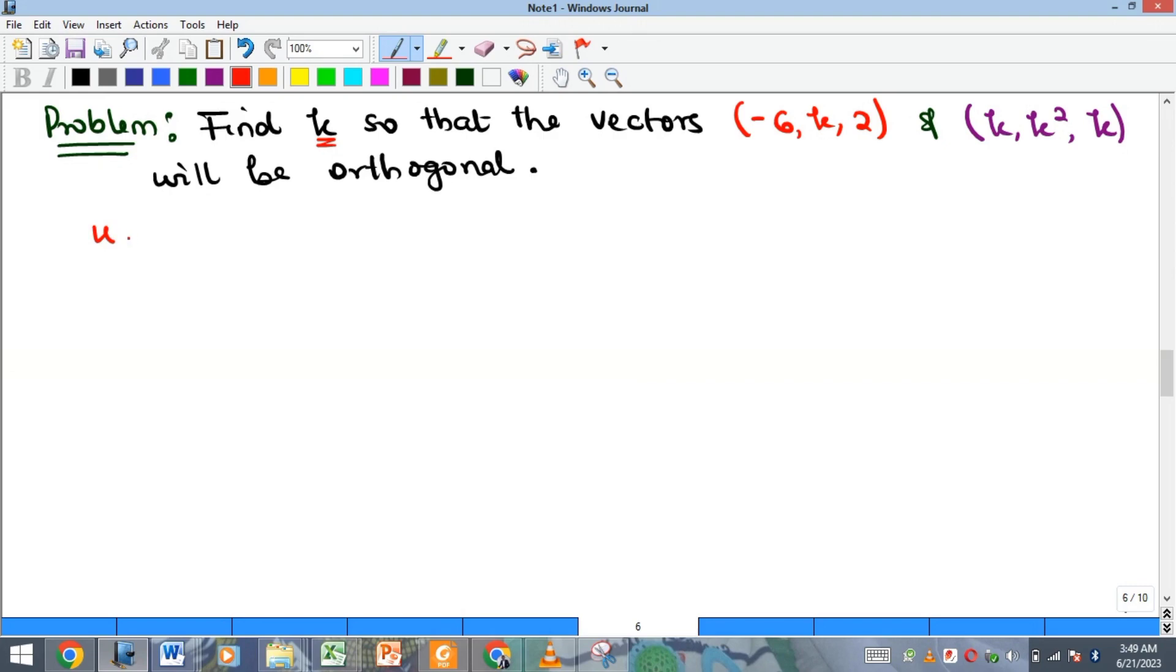Two vectors u and v are orthogonal if their dot product is zero. So in solving this problem, for these two vectors to be orthogonal, all we need to ensure is that if we take the dot product of the two vectors, multiplying them, it should be equal to zero.